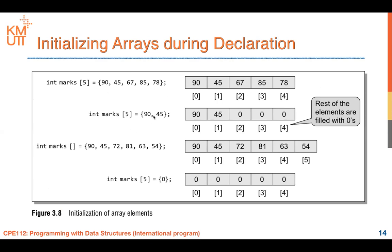If you initialize only two out of five elements, you get those two values and the remaining three slots become zero. You can also declare the array without specifying the size — such as marks[] = {values} — and the compiler will allocate space based on the number of initializers. If you initialize all elements to zero using int marks[5] = {0}, every slot is set to zero.